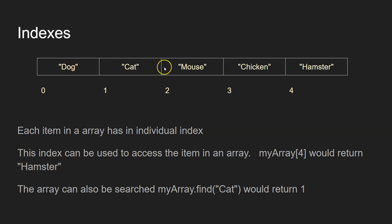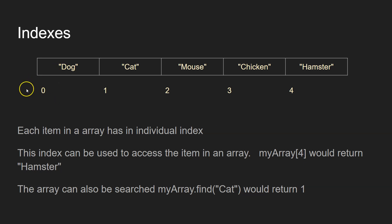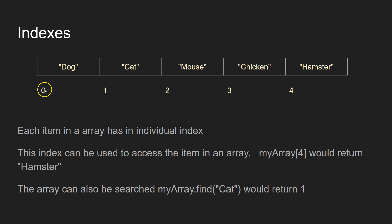So those are strings. We've got one, two, three, four, five strings. Each item in that array has an index attached to it, and depending on the language that you use, that indexing might start at zero or it might start at one, or actually in some languages you can start it at any number you want to.